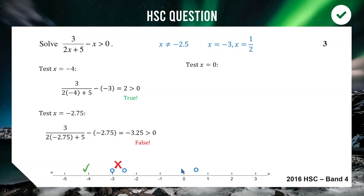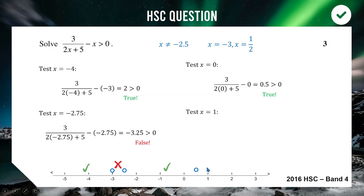Testing x = 0 (between −2.5 and 0.5): gives 0.5, and 0.5 > 0 is true — this region is included. Testing x = 1 (greater than 0.5): gives approximately −2/3, which is negative and not greater than 0 — false. So the region right of 1/2 is excluded.